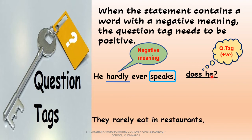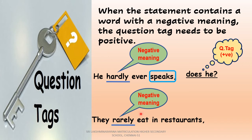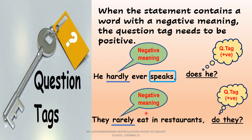Coming to another example: 'They rarely eat in restaurants.' The word 'rarely' gives a negative meaning — they will not eat in restaurants often. So the question tag should be positive: 'do they?' The sentence has no auxiliary verb, so check the main verb — 'eat,' which is in simple present tense. The subject 'they' is plural, so we use 'do' followed by the subject pronoun 'they.'